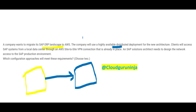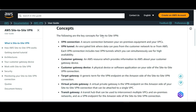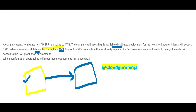The client will access this SAP system from a local data center — they will access it from that location — but via a site-to-site VPN they will connect to SAP. VPN gives you tunneling and connection features. Now you want to design the network access — what configuration approach would meet this requirement?